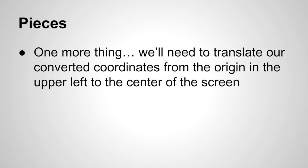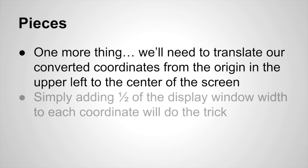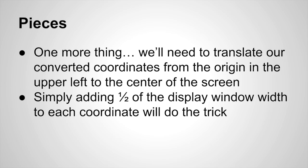So what we need to do is translate those converted coordinates—that is, the coordinates from polar to Cartesian—from that origin in the upper left to the center of the screen. In order to do that, it's real simple. We're going to add one half of the display window width to each coordinate before we actually draw the lines, and that will move them from that upper left corner.